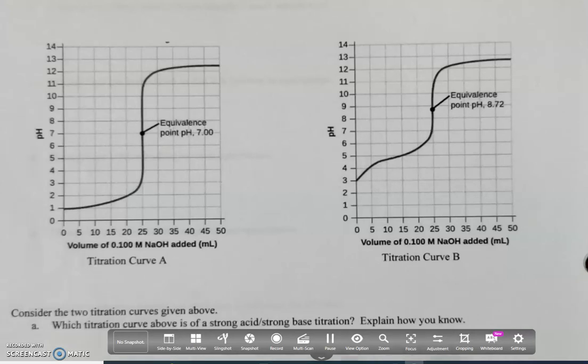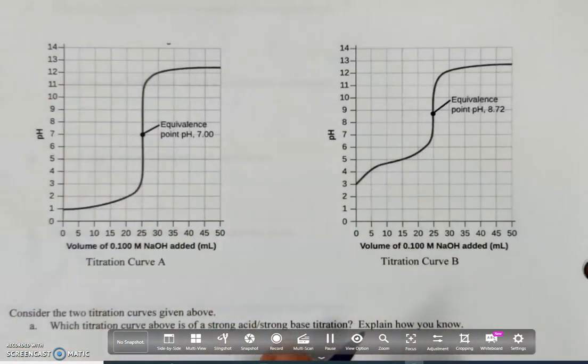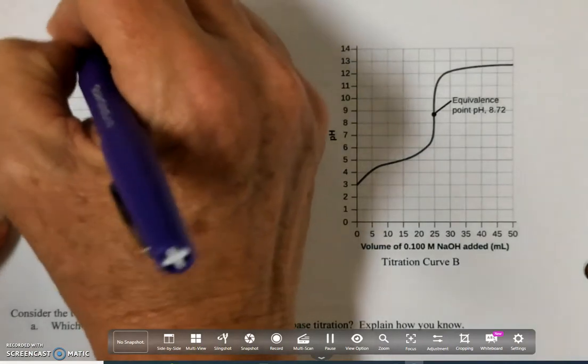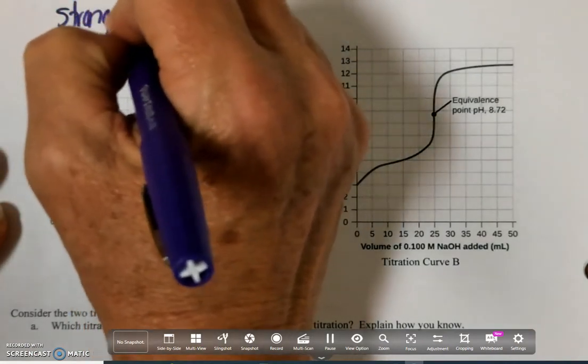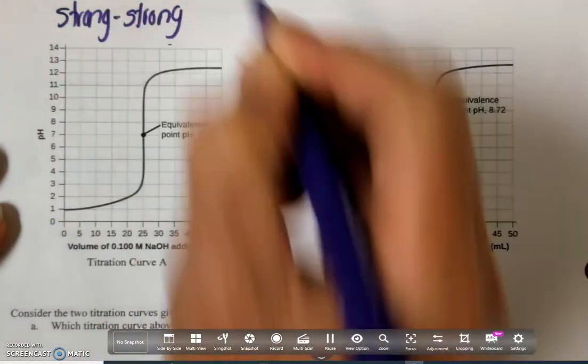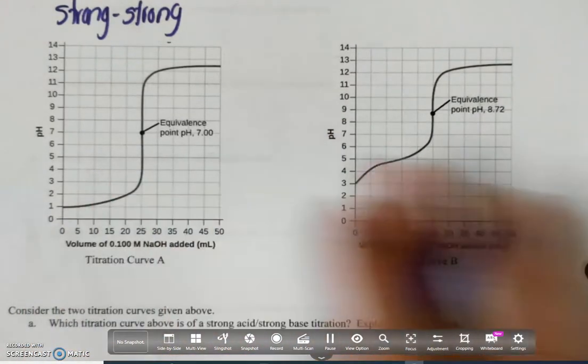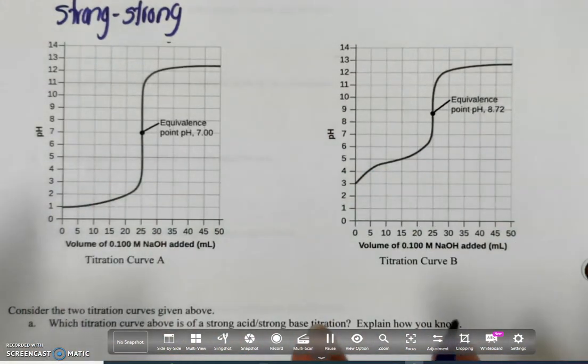Okay, so this first example is going to be a strong-strong titration. What I'm going to do is talk about the curve and the calculation and kind of put the two together.